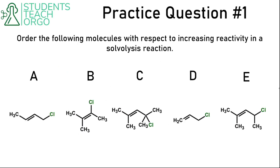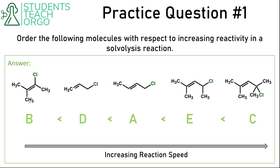So here's our first practice question: order the following molecules with respect to increasing reactivity in a solvolysis reaction. This is a good question — I would definitely pause it, try to figure out the order, write it down. Here's the answer. I've redrawn these in order of increasing reaction speed, and this is a good problem to go through and explain why this is the right order.